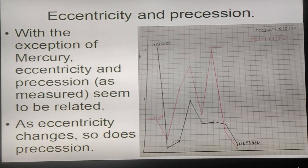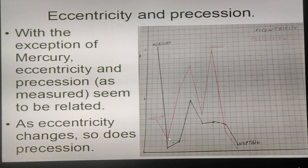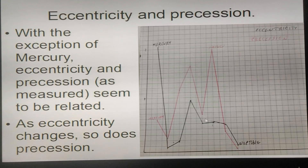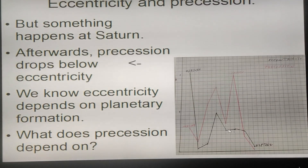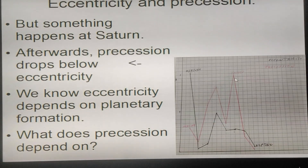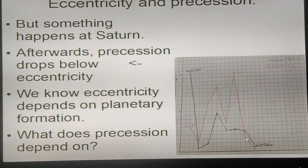There's another problem. With the exception of Mercury, eccentricity and precession seem to be related — as precession goes up, eccentricity goes up, and as one goes down, the other does too. Something unusual happens at Saturn: the eccentricity is not much, but the precession is very high. Afterwards, the precession before Saturn falls below the eccentricity and kind of flips itself around, just like Mercury.